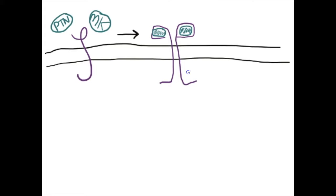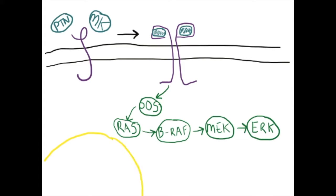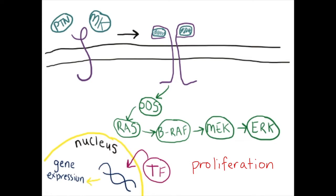After a growth factor binds to anaplastic lymphoma kinase, a signal transduction cascade occurs involving SOS, RAS, BRAF, MEK, and ERK proteins. Ultimately, activated transcription factors travel to the nucleus where they bind to DNA, causing more gene expression of growth factors, cyclins, and cytokines. This results in cell division and proliferation.